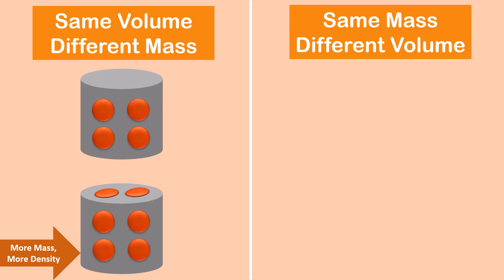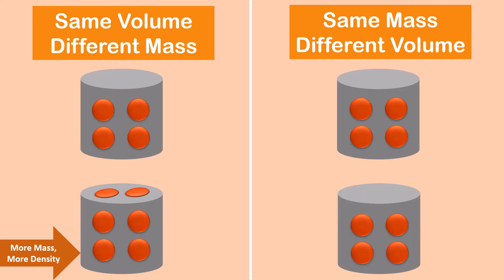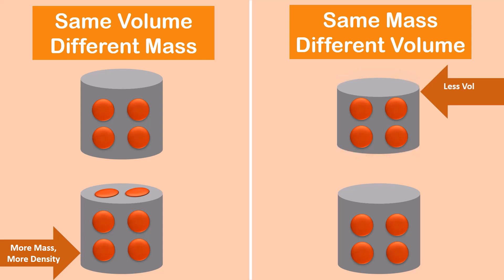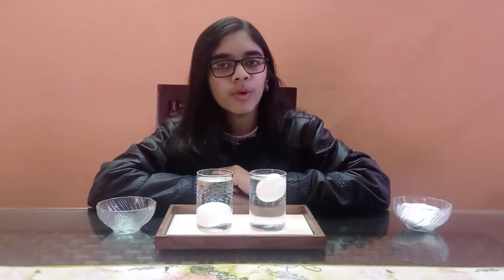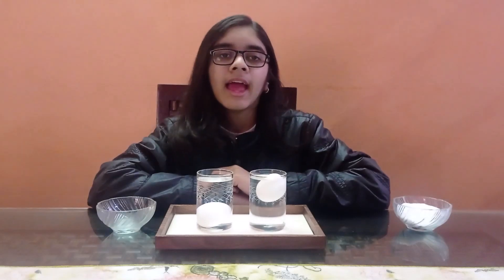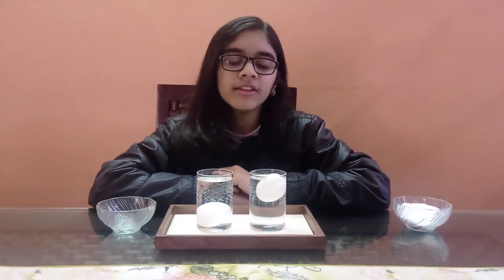However, if two objects have the same mass, then the one which occupies less space is said to have more density than the object which occupies more space. Objects of density less than that of a liquid float on it, and objects of density greater than that of a liquid sink in it.